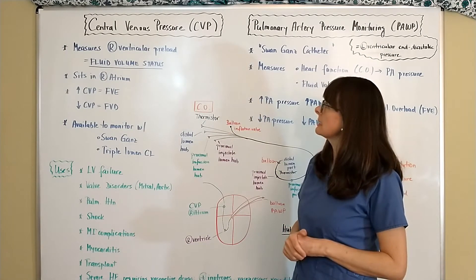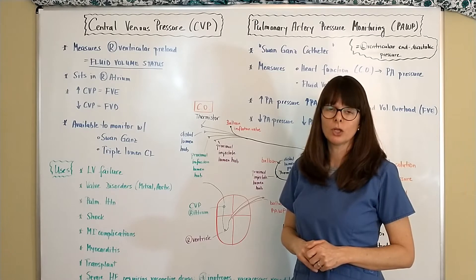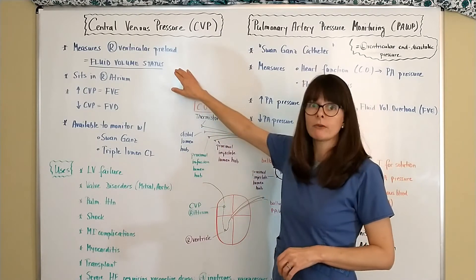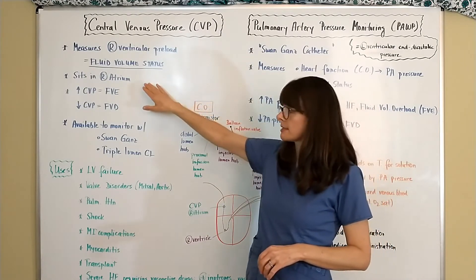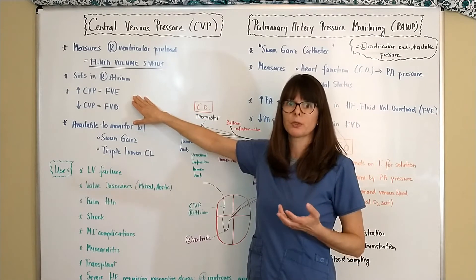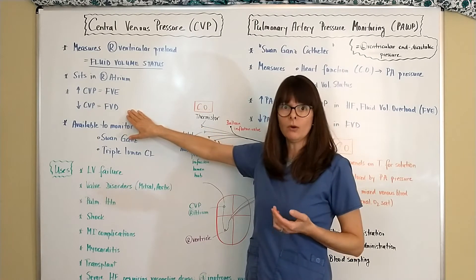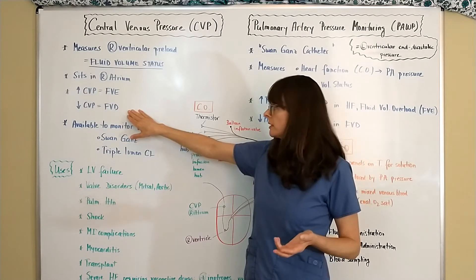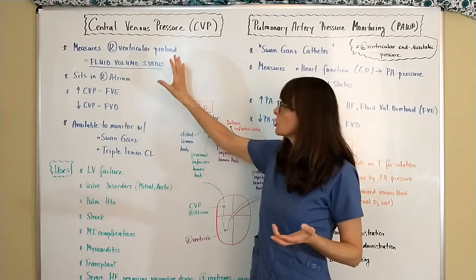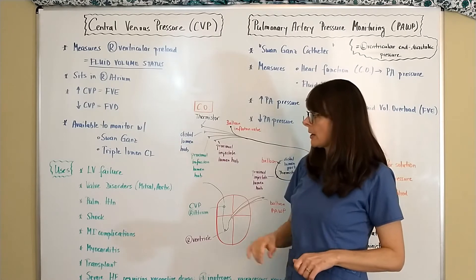Central venous pressure, also called CVP, measures the right ventricular preload, which can also be referred to as stroke volume, and therefore it measures the fluid volume status. It sits in the right atrium. If the CVP is increased, that means there is fluid volume excess — too much fluid in the system. If the CVP is low, it means the patient is dehydrated or has fluid volume deficit, which could also indicate a loss of blood. So central venous pressure is basically a measure of fluid volume status.